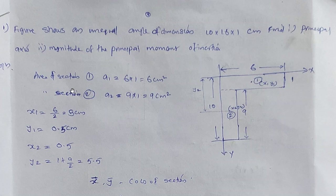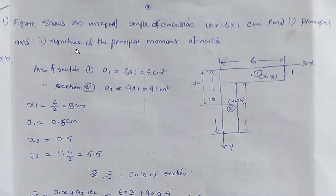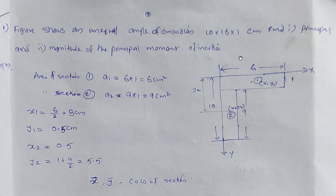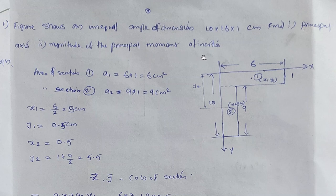We look at unsymmetrical bending with a simple problem. The figure shows an equal angle section of dimension 80 by 80 by 1 centimeter. We need to find the principal axis and the magnitude of the principal moment of inertia. This section is not symmetric, so the centroidal axes are not principal axes. The principal axis is the axis about which the product of inertia is zero.